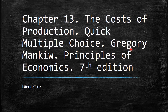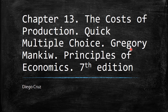Welcome everyone to this new video. This is about chapter 13, the costs of production. We are going to work through quick multiple choice. This is the book of Gregory Mankiw, Principles of Economics, 7th edition.